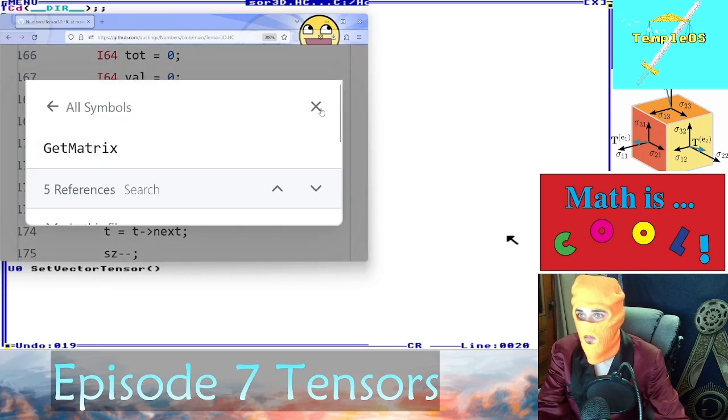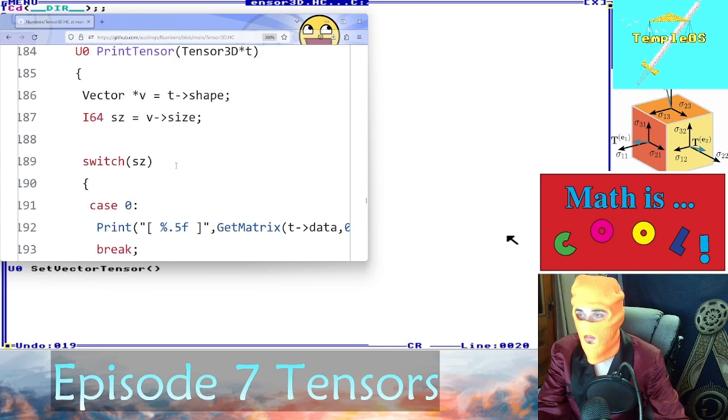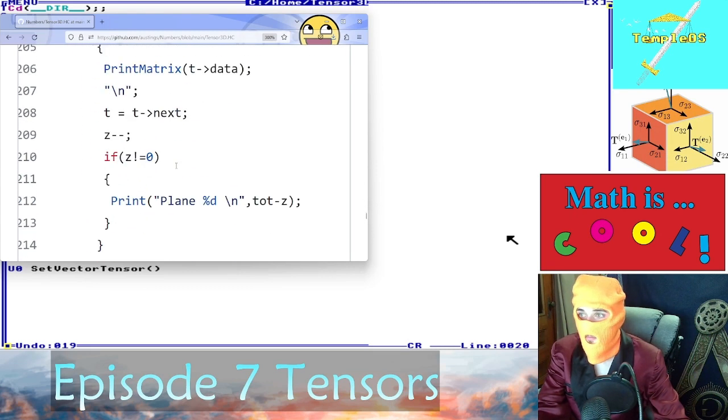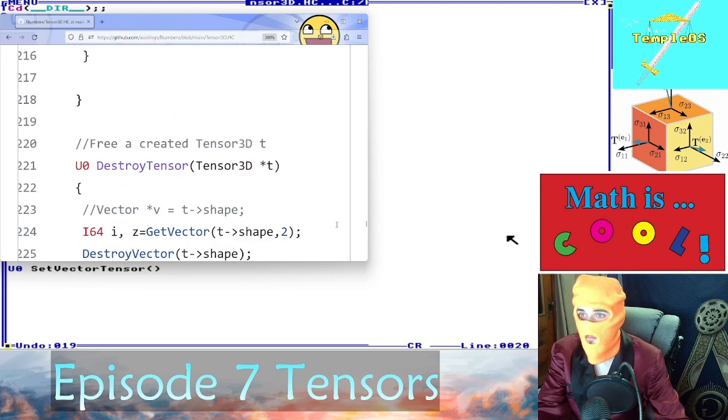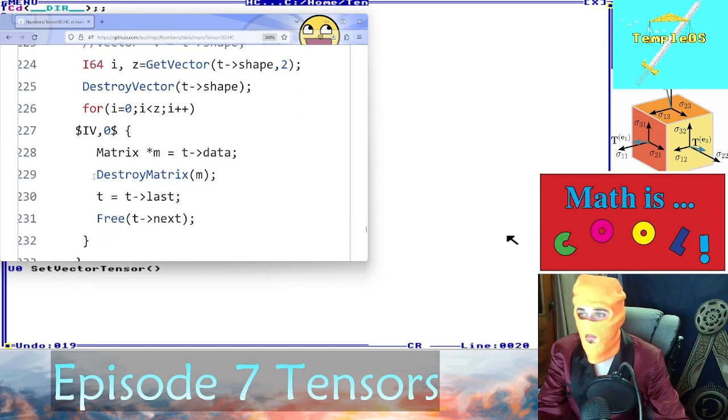You can also do the same thing with get if you want to retrieve the value. It's just like getting values from the matrix except we have this additional z dimension. Z is also used for printing and destroying.